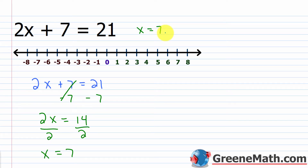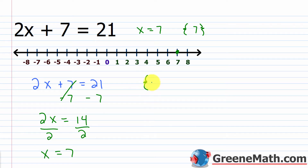You could also use a solution set — the set contains one element, which is 7. Additionally, we could show the solution graphically on a number line by putting a filled-in circle at 7. There's also something known as set builder notation, where I say the set of all elements x such that x is equal to 7. We'll cover that at the very end of this lesson. The point is to show you that there are many different ways to notate the solution for this equation.